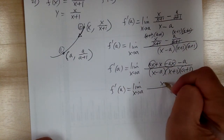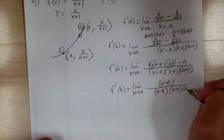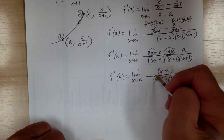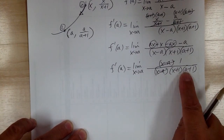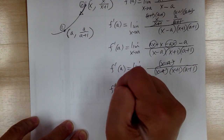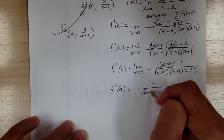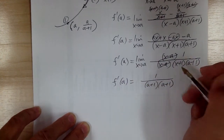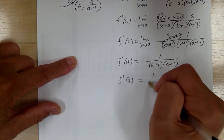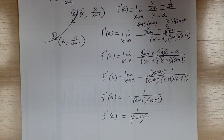From here, this cancels out. So I get x minus a over x minus a, times x plus 1, a plus 1. When you do it correctly, something should cancel — so x minus a cancels. Now we can substitute. Before, x equal to a makes this 0 — so you couldn't substitute. Now you can: you get a plus 1, a plus 1. So f prime of a equals 1 over a plus 1 squared.